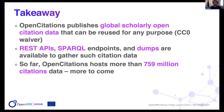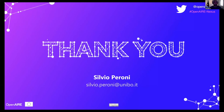Takeaway message: Open Citations publishes a global, openly-licensed citation dataset that can be reused for any purpose — all data is licensed with the CC0 waiver. We have several services — in particular REST APIs, SPARQL endpoints, and dumps — for gathering citation data. Currently we are hosting more than 759 million citations, but we are processing new ones so more will be released pretty soon.